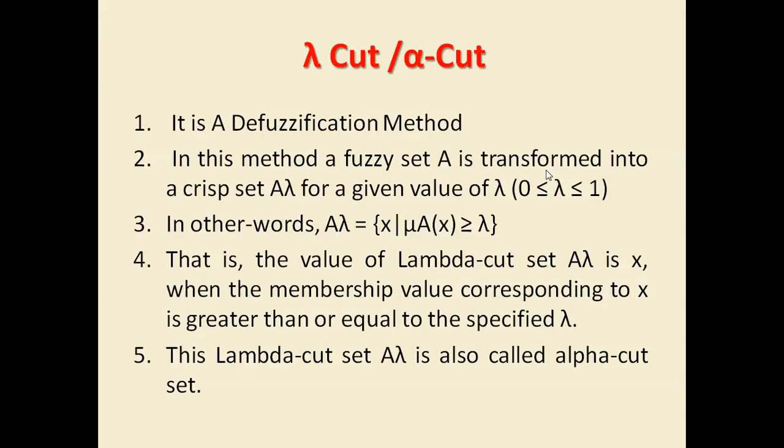In other words, A lambda is x where x is a member of fuzzy set where the membership value of that x should always be greater than or equal to lambda. In that case the new set that will be generated will be called lambda set or alpha cut set.